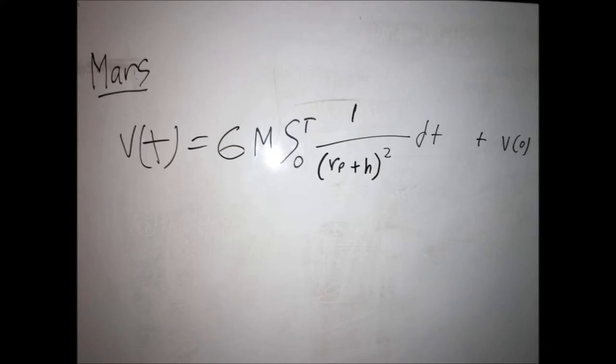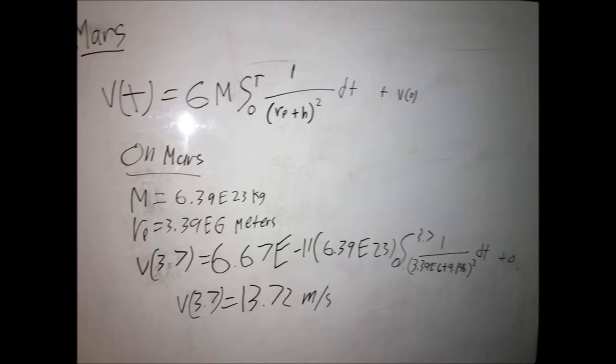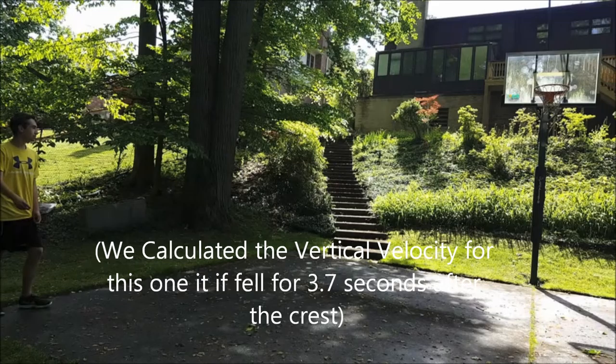This is a video of the trick shot we did on Mars. We wanted to see how the velocities would differ on different planets. Using the same formulas we derived earlier, we were able to calculate the velocity of a basketball on Mars after 3.7 seconds.